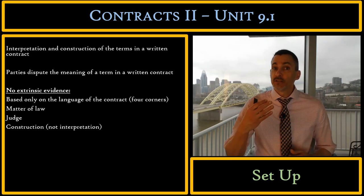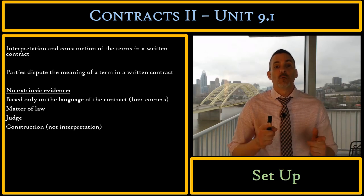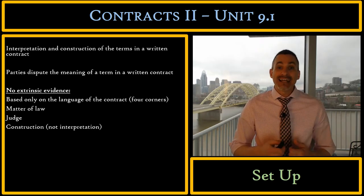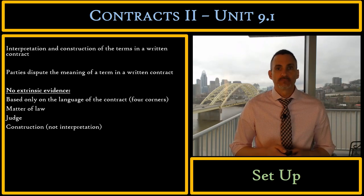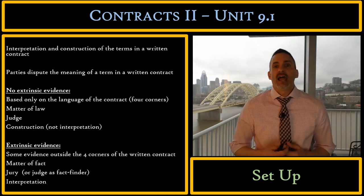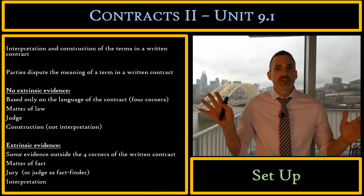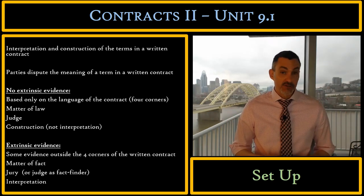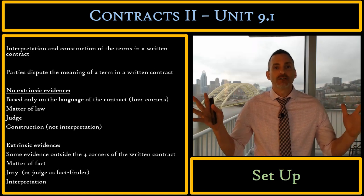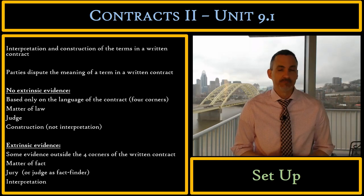The judge will construe the contract terms without the help of a jury when the parties have differing interpretations of a contractual term and they don't have any extrinsic evidence to support their interpretation or construction. The next situation is when we use extrinsic evidence — parties once again have differing interpretations of a contract term, and now they have some sort of extrinsic evidence that supports their particular interpretation. We say that this is a matter of fact, which means the jury has to hear the evidence and determine what the parties agreed to.